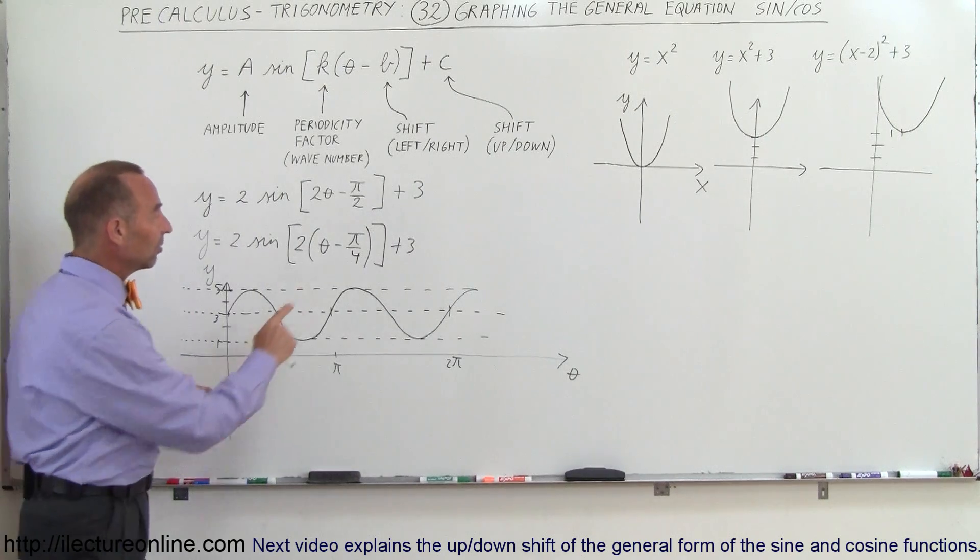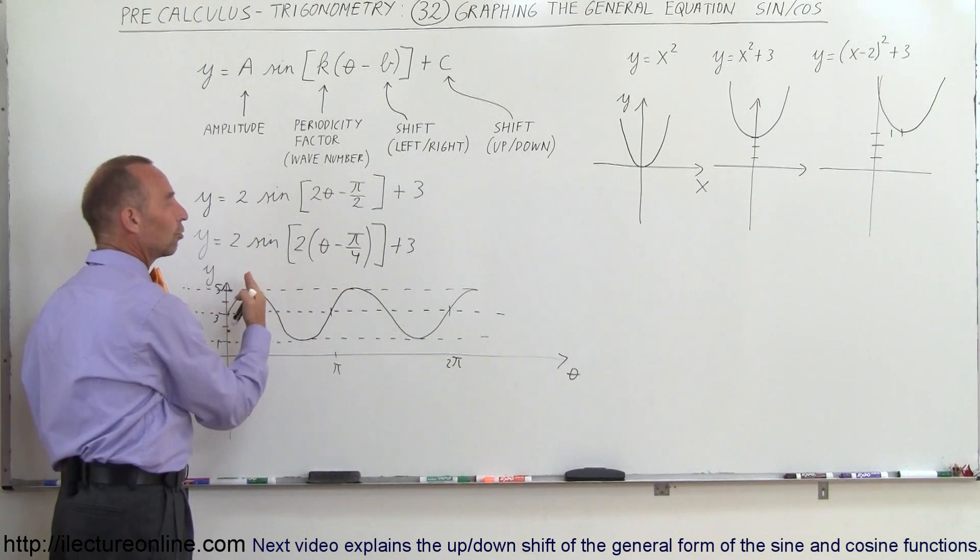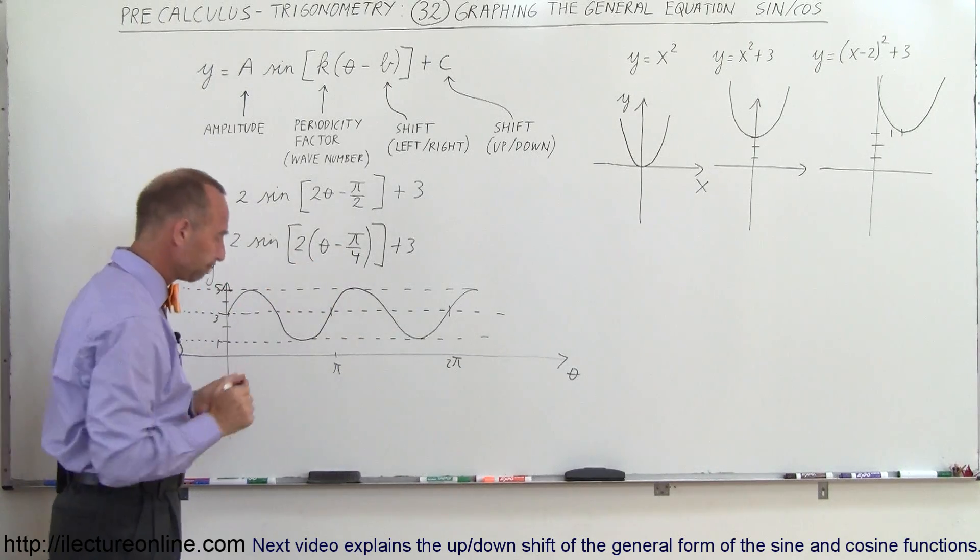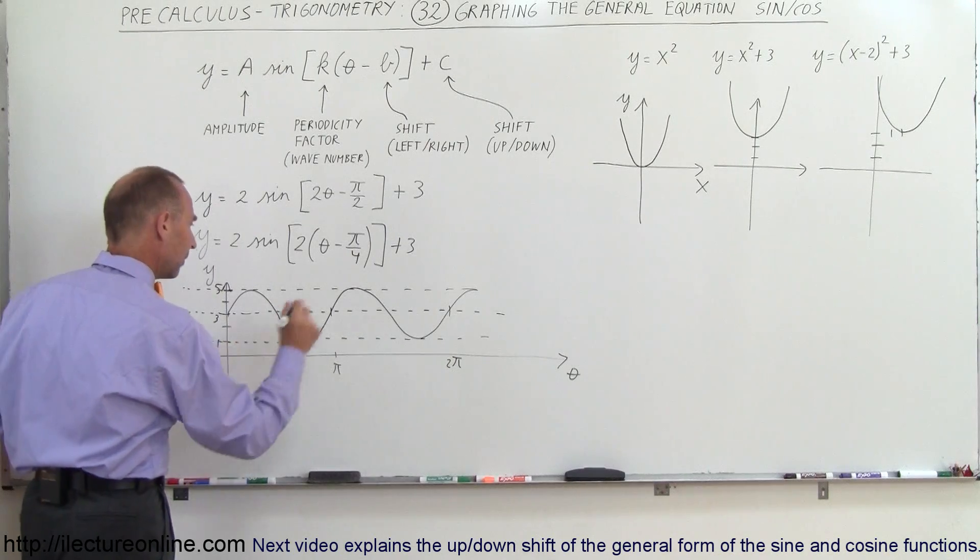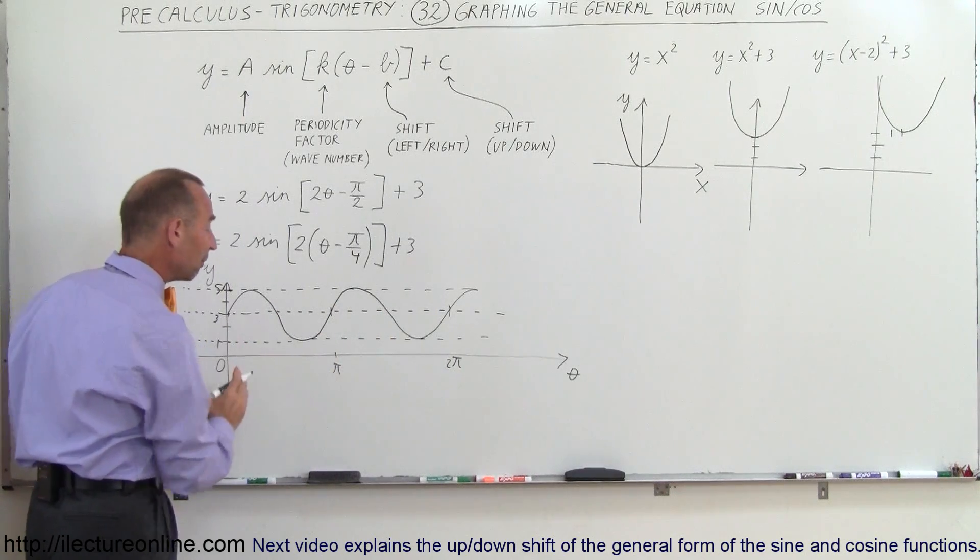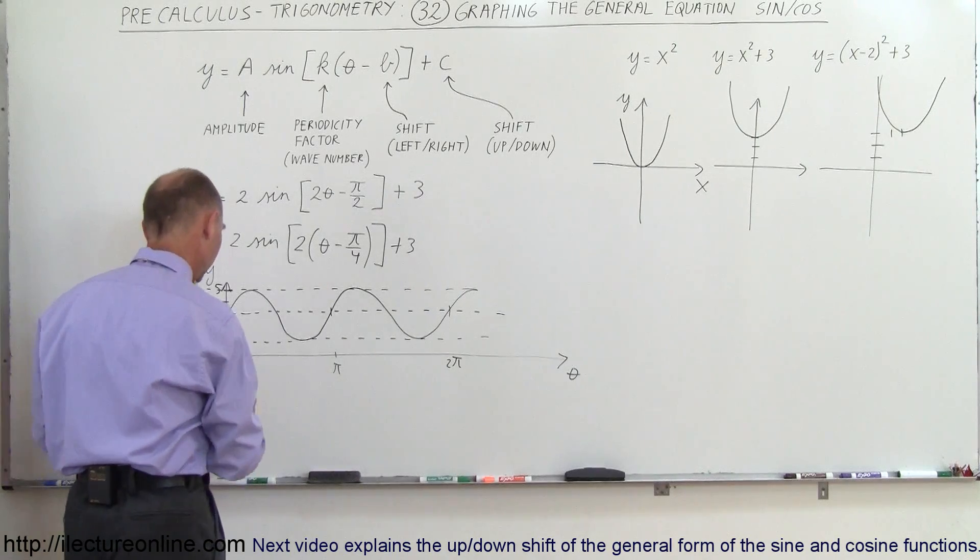In addition to that we can see there's going to be a shift left to right. In this case since it's negative, the shift is going to be to the right. Alright, so instead of starting over here at θ equals 0, we're going to shift everything over by a π force. So let's find out where these are.